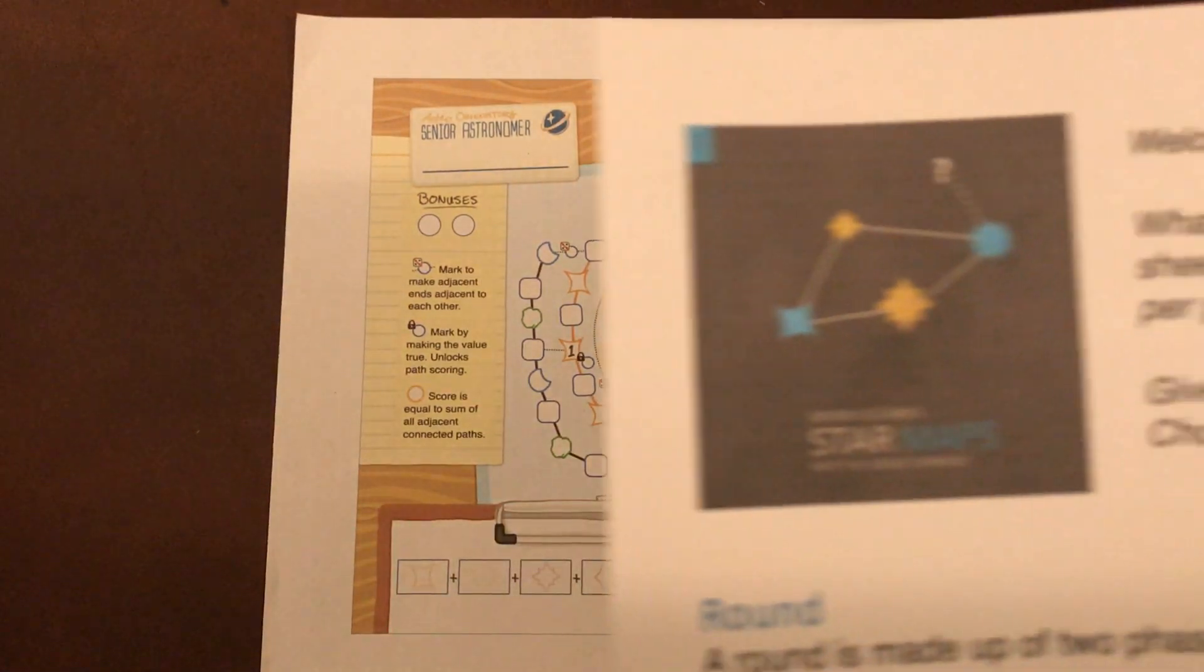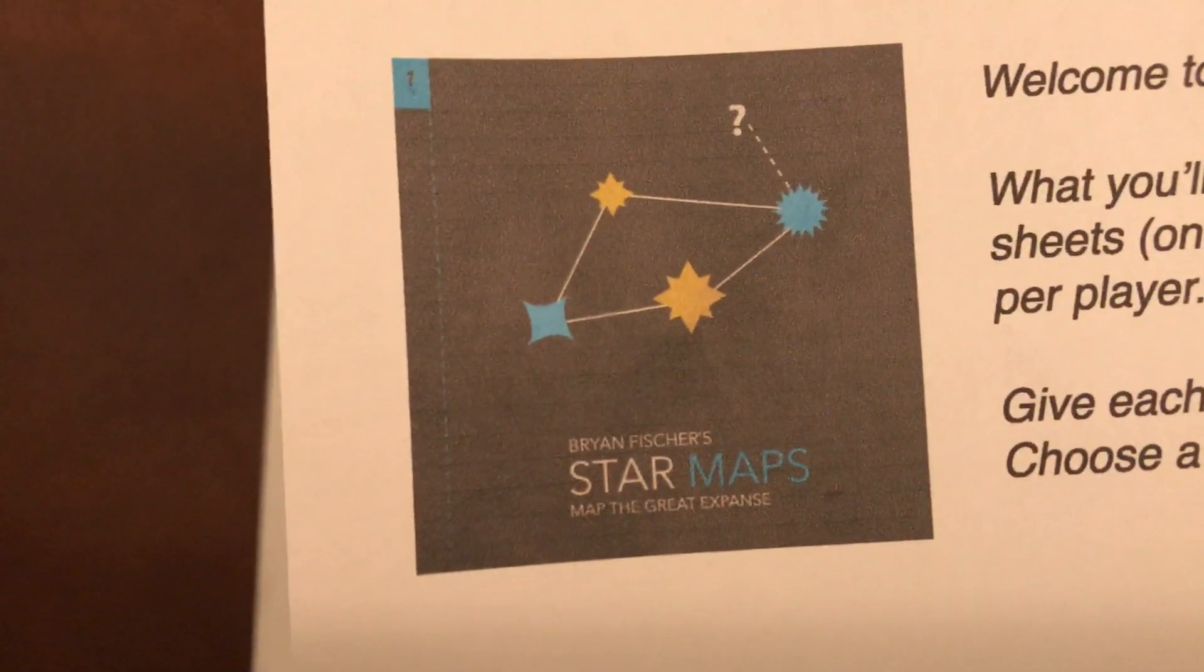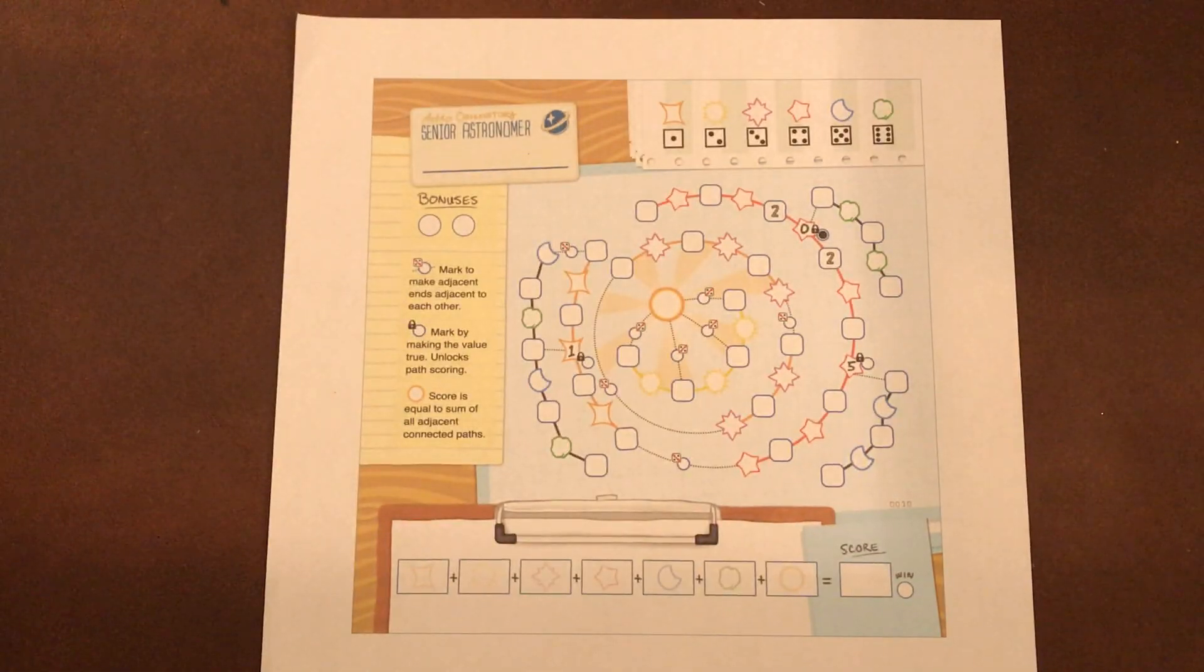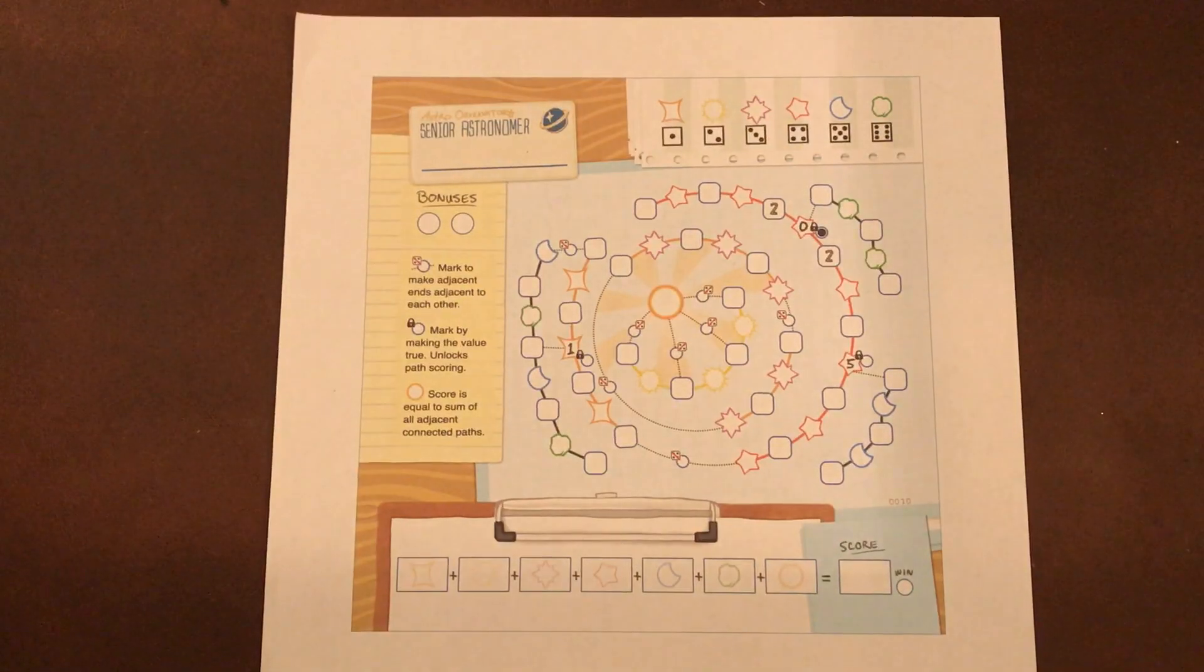Alright, so we're going to do a quick video on Brian Fisher's Star Maps. This is one of the roll and write games from Spielpress. It's usually in a book, a little square book that looks like that.